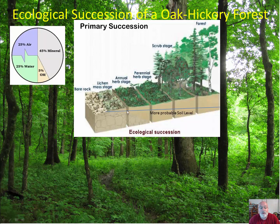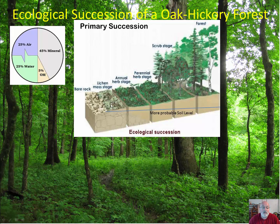Soil happens very quickly in primary succession. Soil is made of about 50% air and water — when it doesn't rain as much, we get more air; when it rains, we get more water. Soil also has almost half mineral content, which is broken down rock that lichen and roots tend to produce, plus about three to ten percent organic matter where critters live and dead material leaches down with rain into the soil.